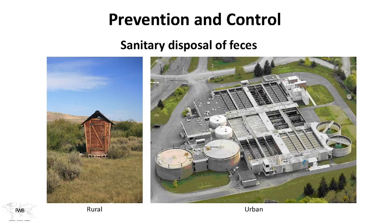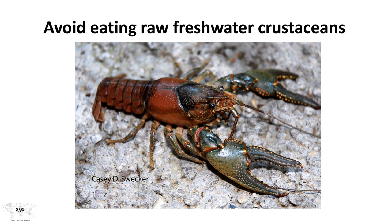Preventing and controlling Paragonimus: it's almost a platitude in parasitic diseases that controlling feces and urine can combat about 80% of non-vector-borne infections. The biggest habit to avoid is eating raw or undercooked freshwater crustaceans. There are places in the world where crustaceans are eaten almost alive. Trying to change that habit through education has so far been difficult — cuisine habits are very hard to change.